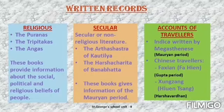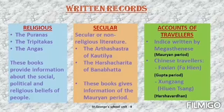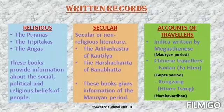The third kind of written records are accounts of travelers — people who visited India during different periods of history. Three travelers are given in your book. First is Megasthenes, who visited India during the time of Chandragupta and wrote the book Indica. Two Chinese travelers also came to India: first is Faxian, and the second is Xuanzang. They throw light on the reign of the Guptas and Harshavardhan.